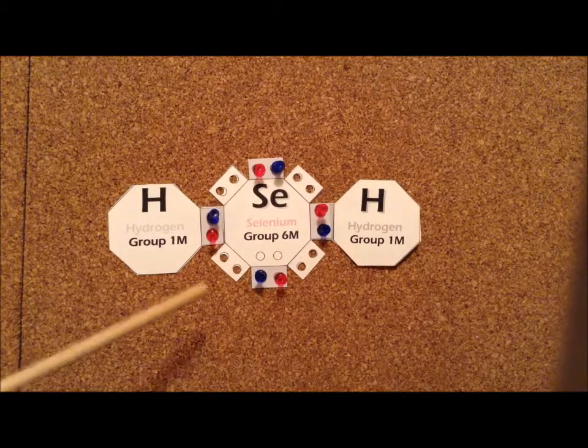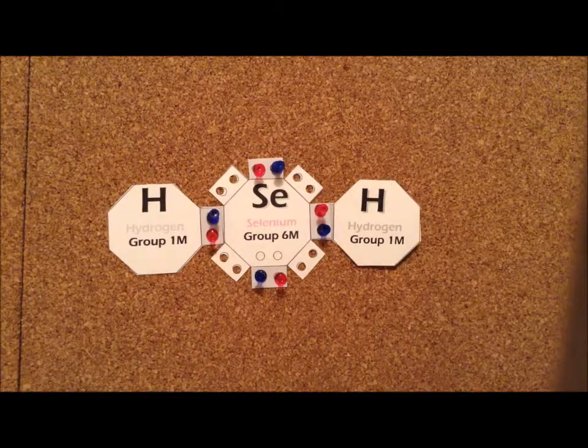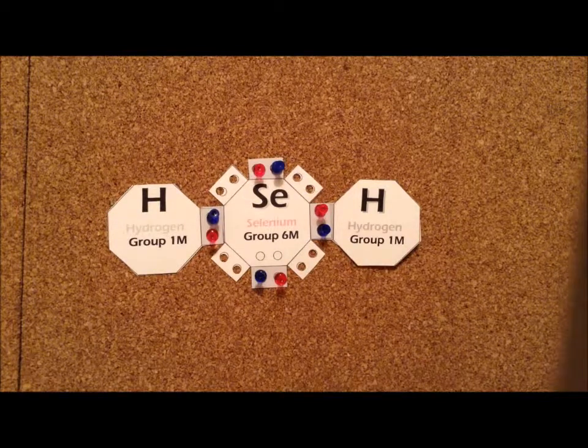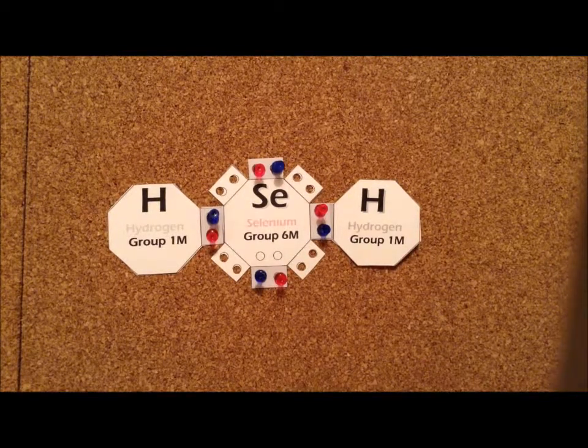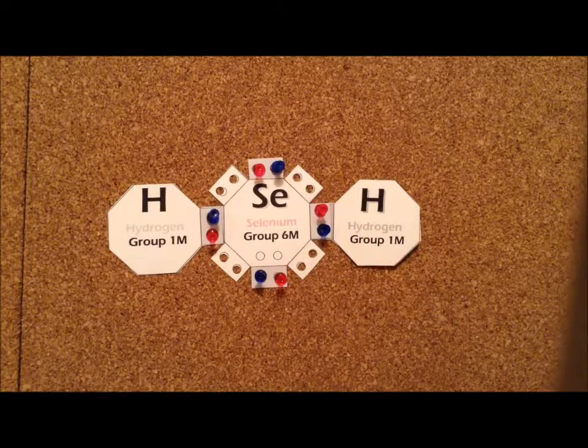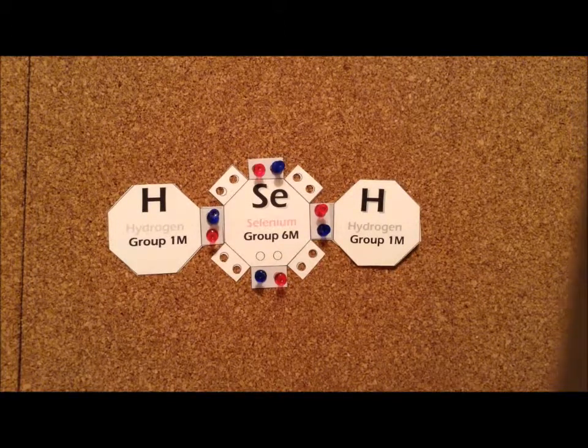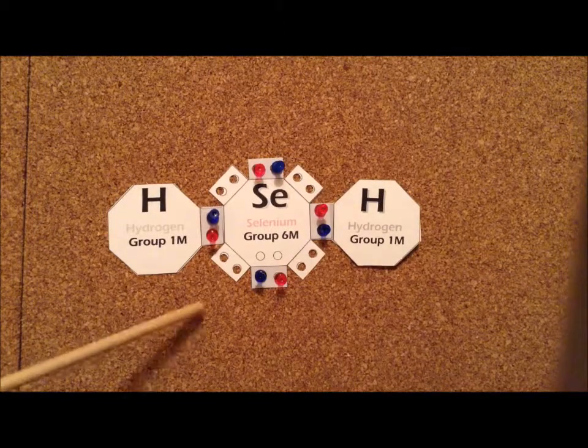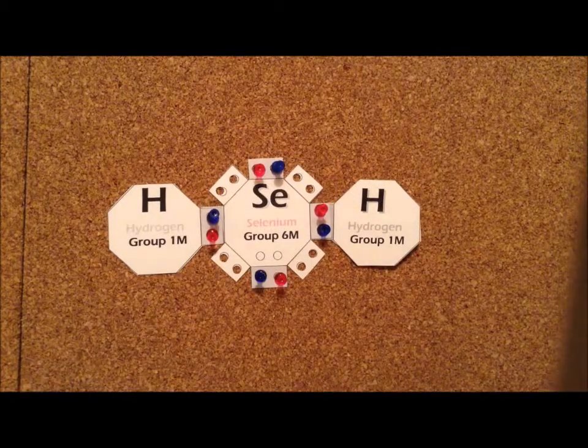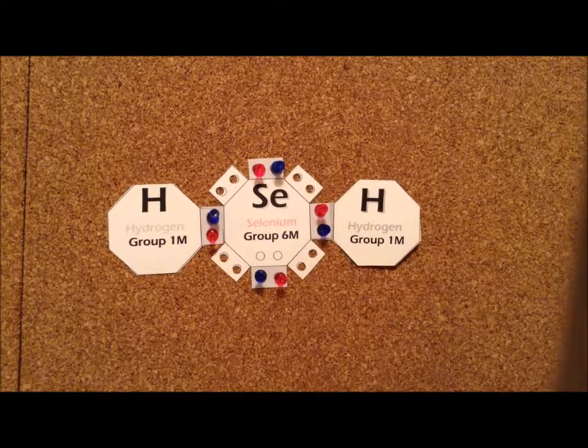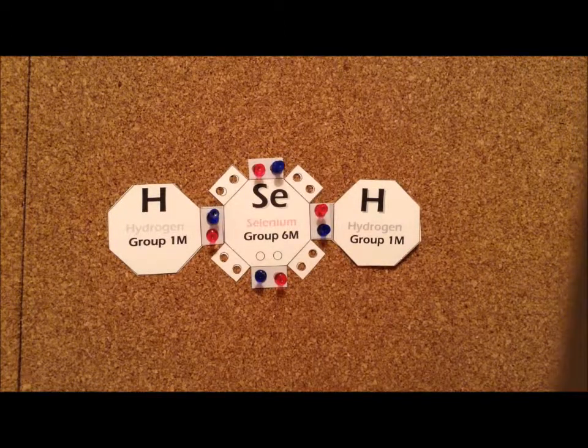Selenium is an interesting element in that it can replace sulfur in the amino acid cysteine. Whereas normally in textbooks they say that there are 20 amino acids, in reality there's actually 21, and the 21st is the selenium analog of cysteine. Selenium is required for human life in very small amounts, but in high levels it is poisonous.